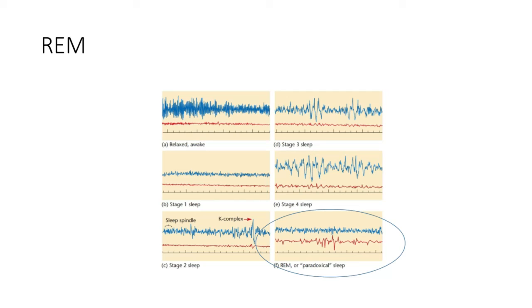One thing that makes it paradoxical is that your EEG signature actually looks more similar to being awake than to being in stage four sleep. So in many ways, it's almost like your brain is awake, but you're still asleep.